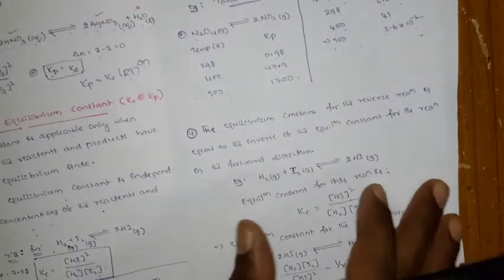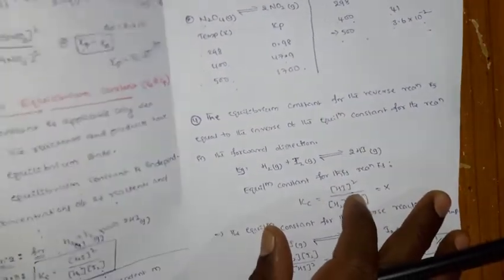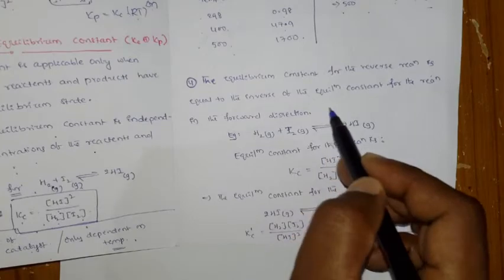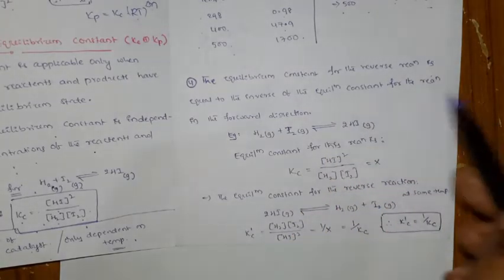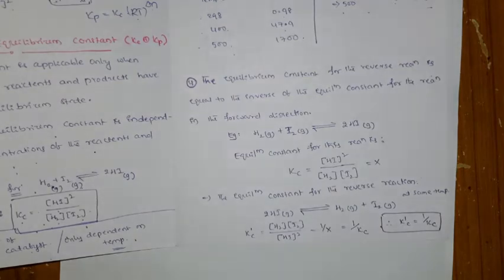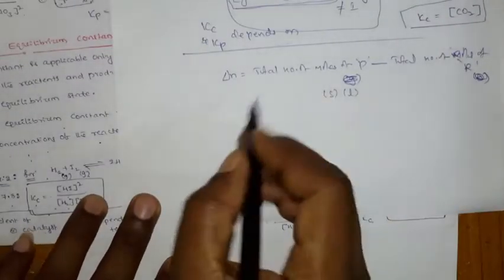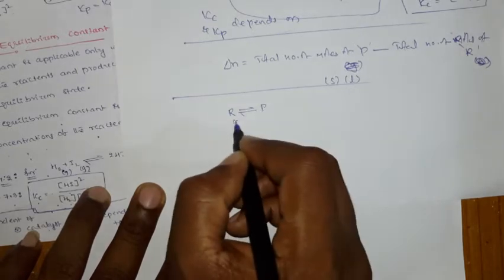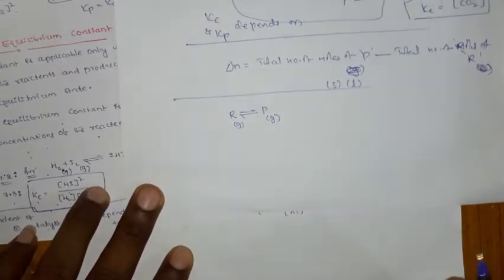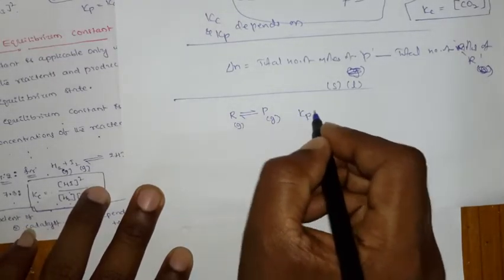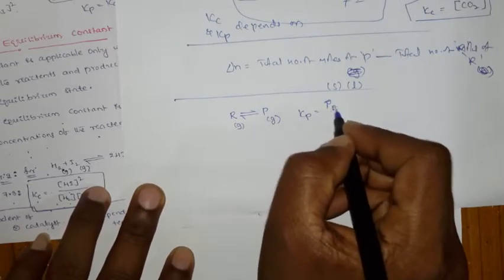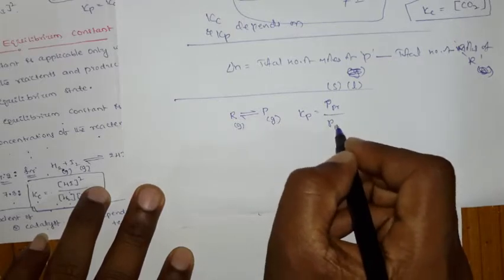Now the fourth very important point: the equilibrium constant for the reverse reaction is equal to the inverse of the equilibrium constant for the reaction in the forward direction. Consider a reaction where reactants are in equilibrium with products — both in the gas phase. The Kp equals partial pressure of products divided by partial pressure of reactants, and assume this value is 2.